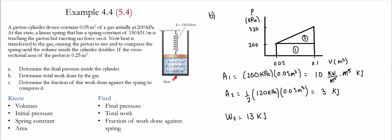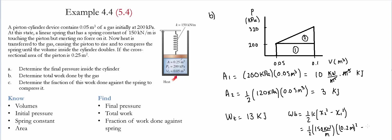An alternative way to find the work done against the spring is using the spring energy equation: one half times the spring constant times (x2 squared minus x1 squared). Substituting values: one half times 150 kilonewtons per meter times (0.2 meters squared minus 0), this gives 3 kilojoules — exactly equal to Area 2, confirming the result.